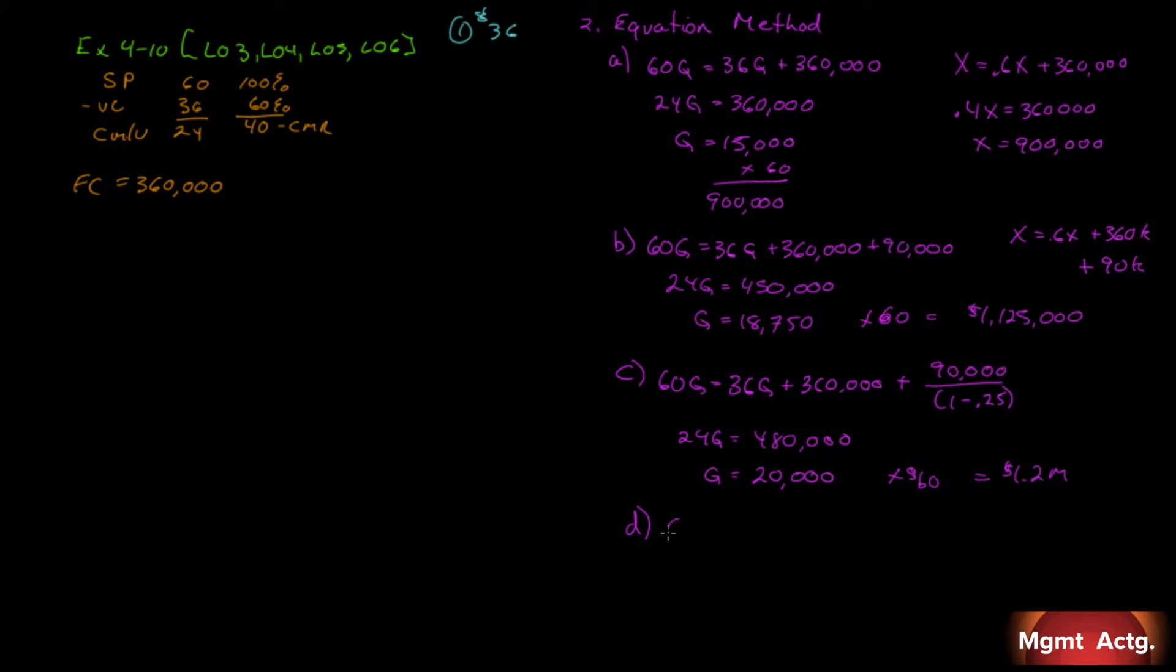The units, we know we're dealing with Q. Our selling price stays the same at $60. So our sales, $60, must equal our variable costs plus our fixed costs. Well, our variable costs are not $36 anymore, they're $33. So it must equal $33 plus our fixed costs, $360,000.